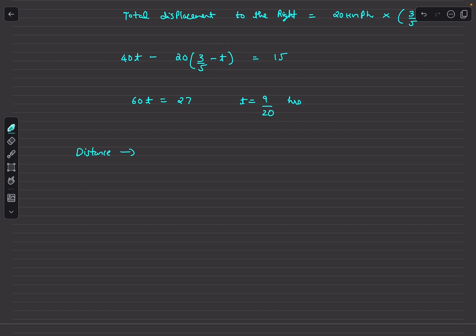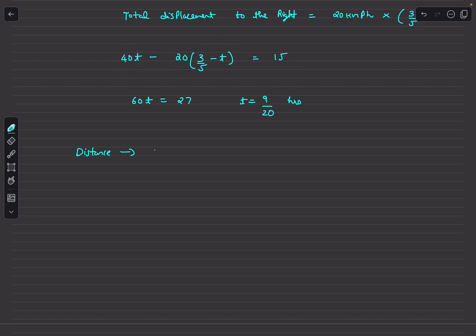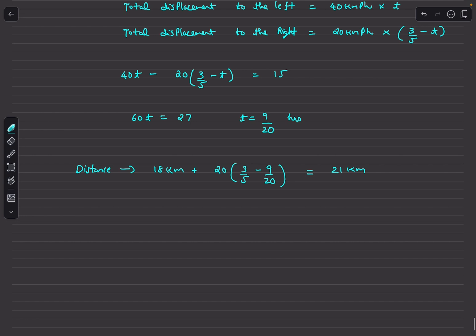The total distance flown by the fly is the sum of leftward and rightward distances: 40 × (9/20) + 20 × (3/5 − 9/20) = 18 + 3 = 21 kilometers. That's the solution to question 20.